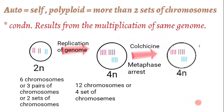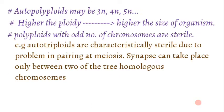In autopolyploidy, replication of genetic material takes place and the cell does not undergo mitosis properly. Autopolyploids may be triploid, tetraploid, or pentaploid. Higher levels of ploidy lead to larger organism size.